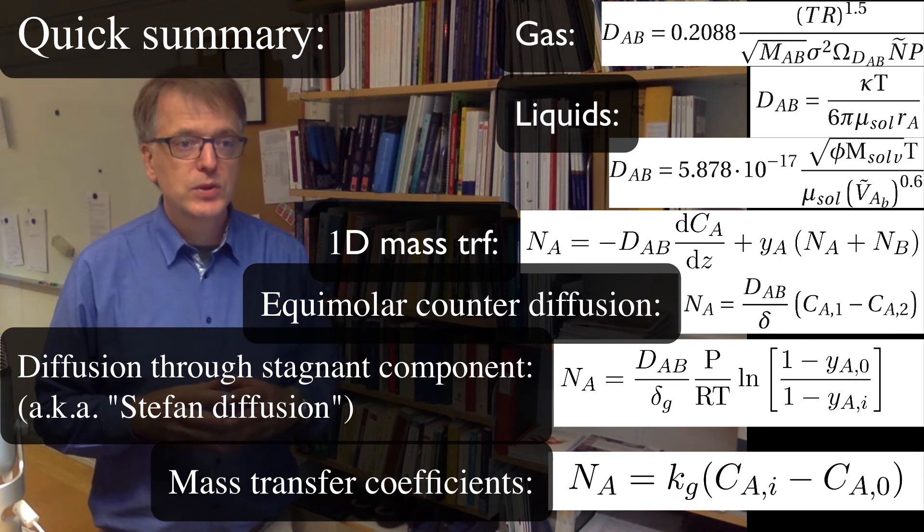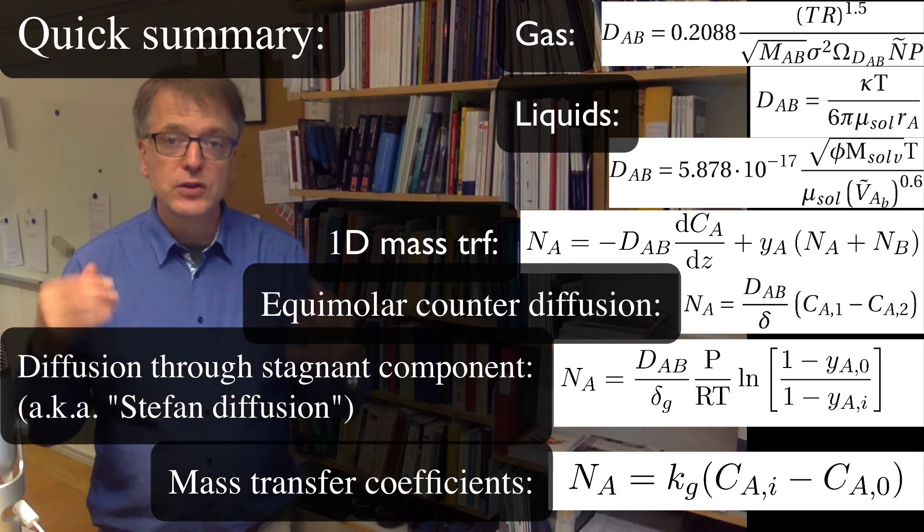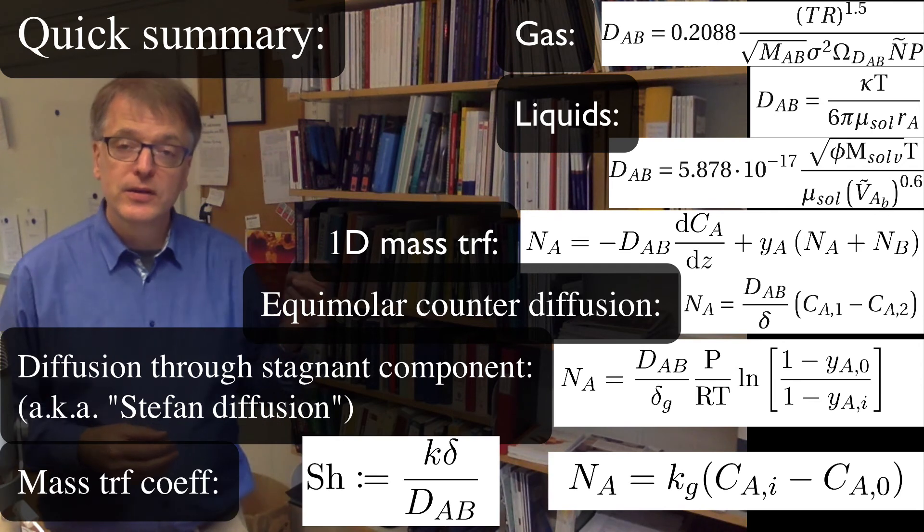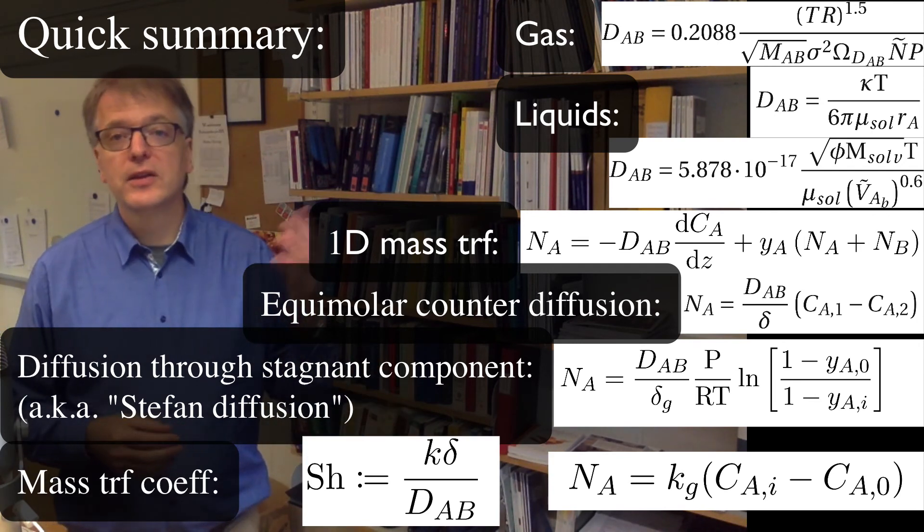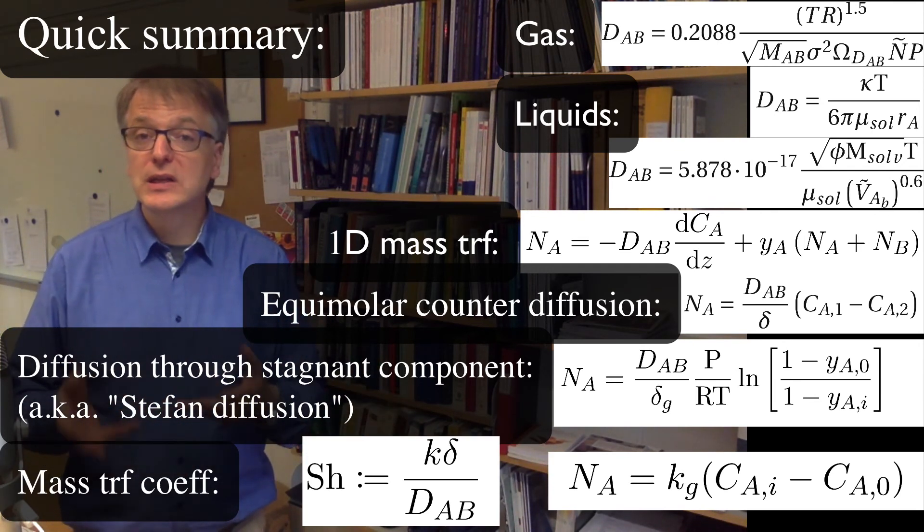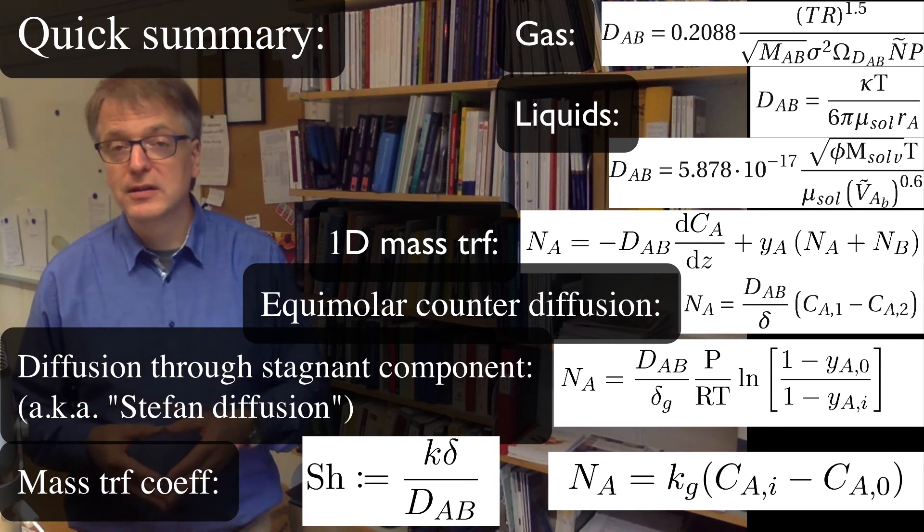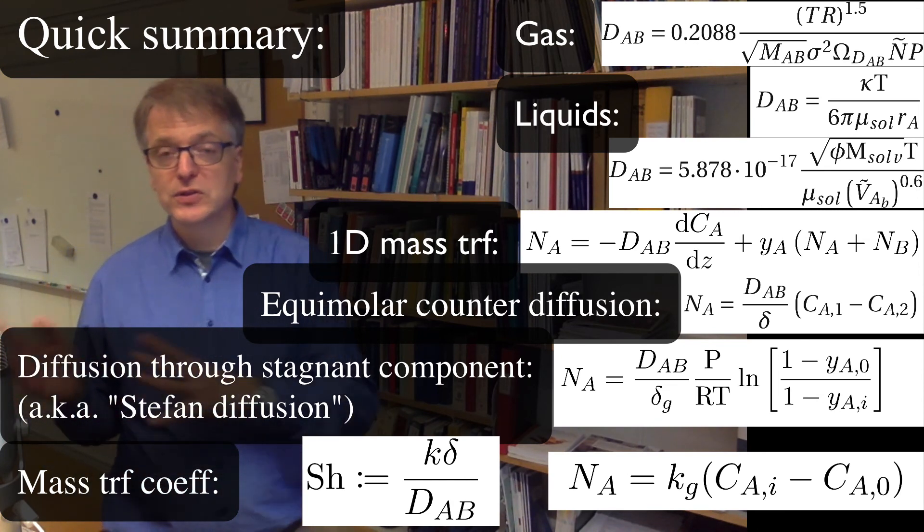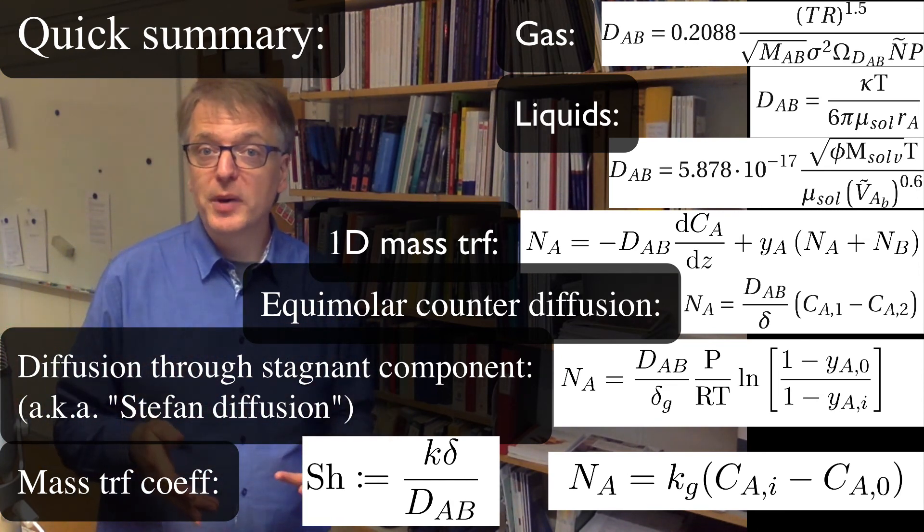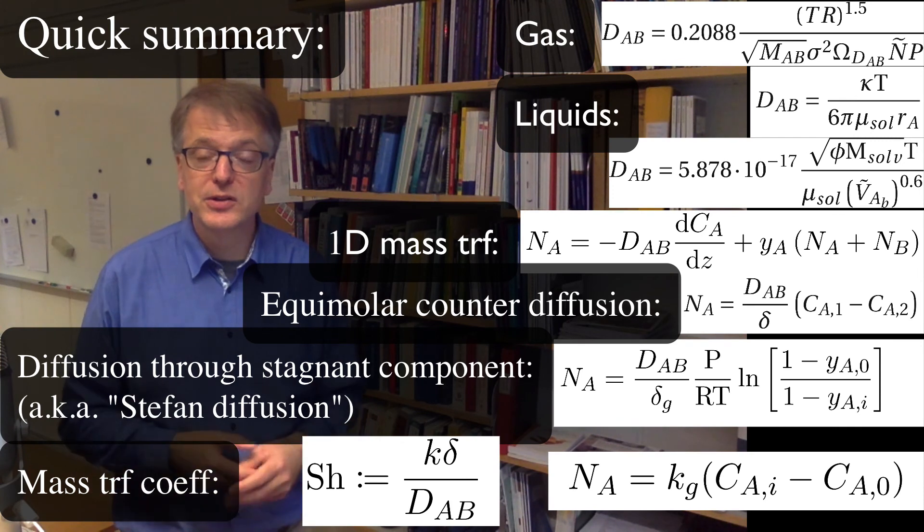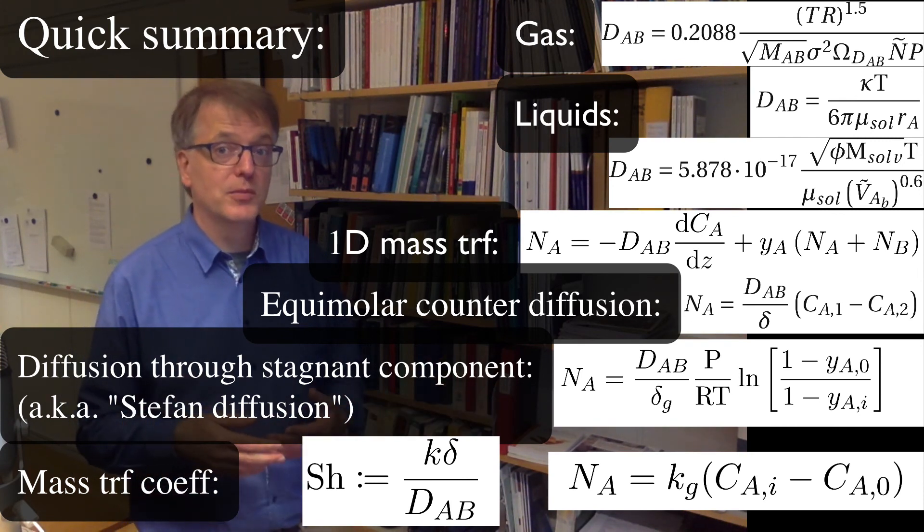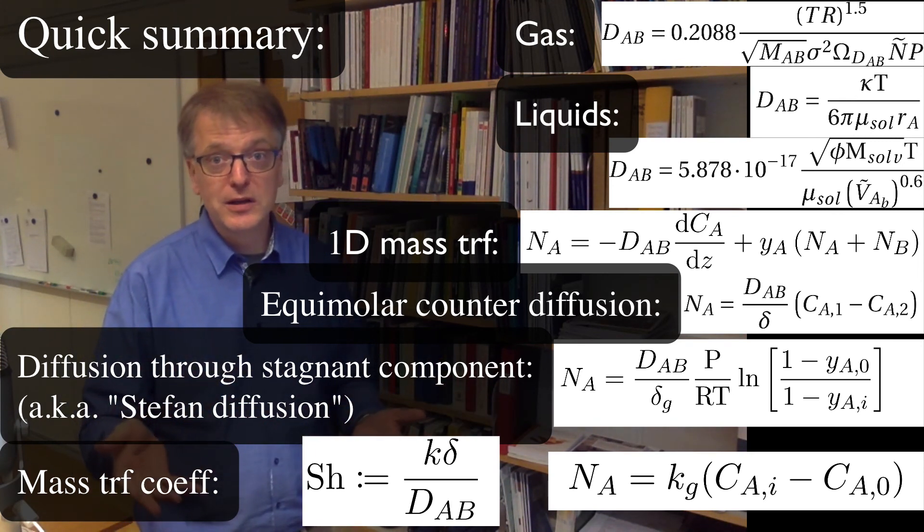We also talked about the Sherwood number that relates the diffusivity and the mass transfer coefficient. And you need a film thickness to calculate the Sherwood number, and you might find for certain situations you might find values in the literature that says that okay Sherwood number is close to one for this case.